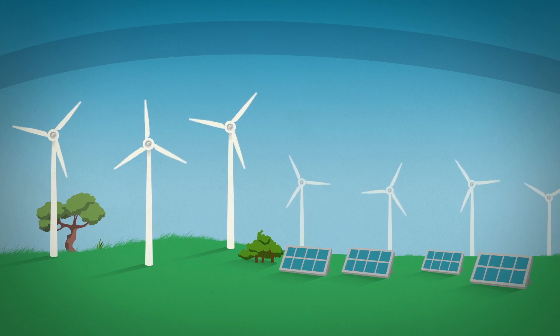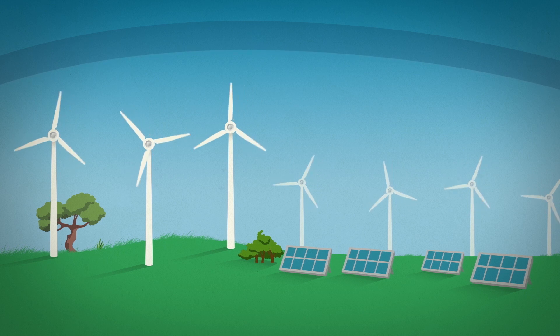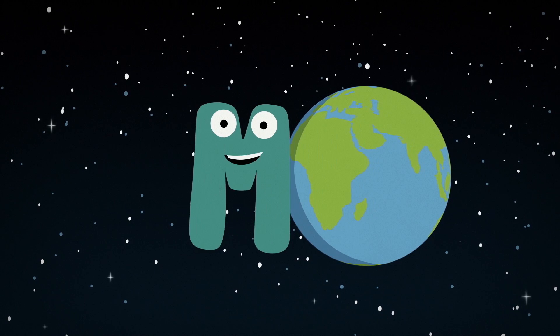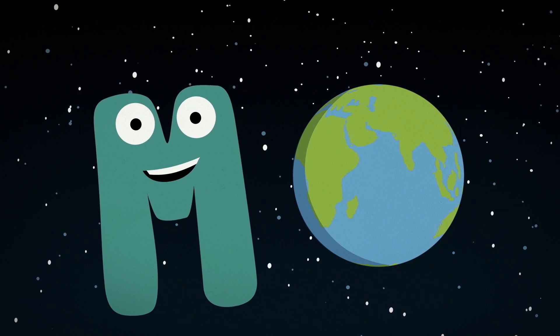We can prevent some of these consequences by reducing the emission of greenhouse gases. This tackles the problem at its root. It's called mitigation.